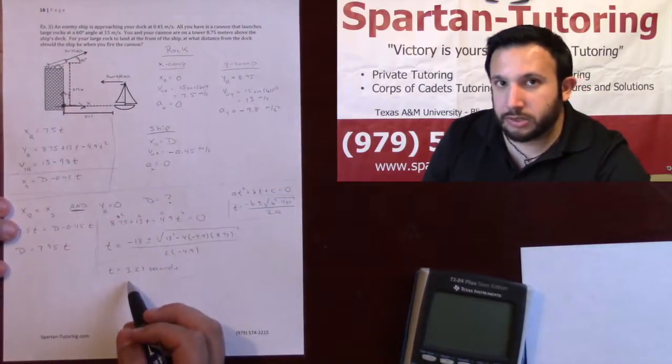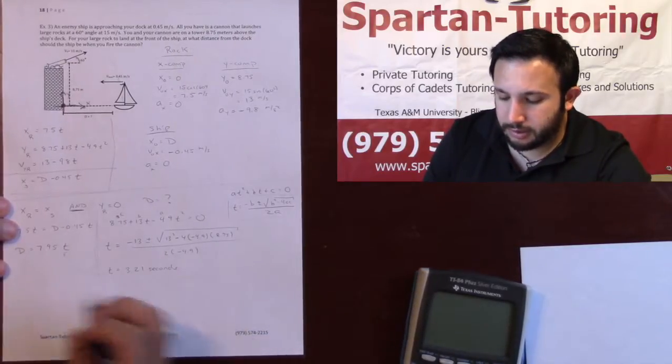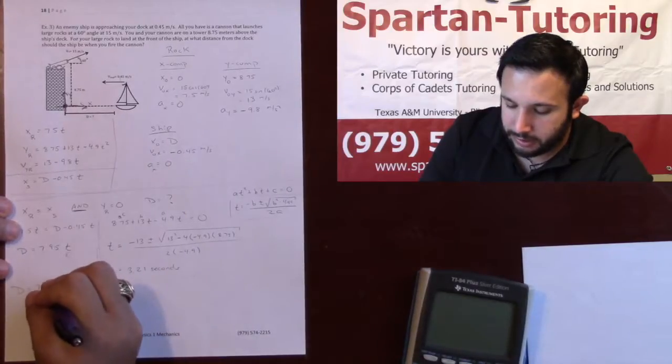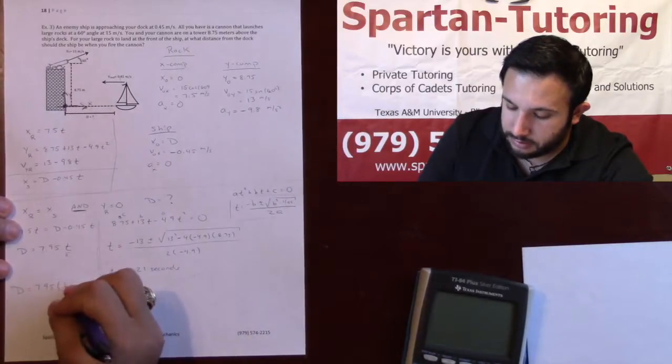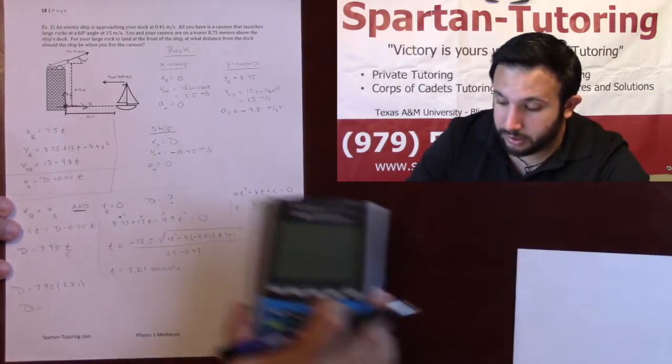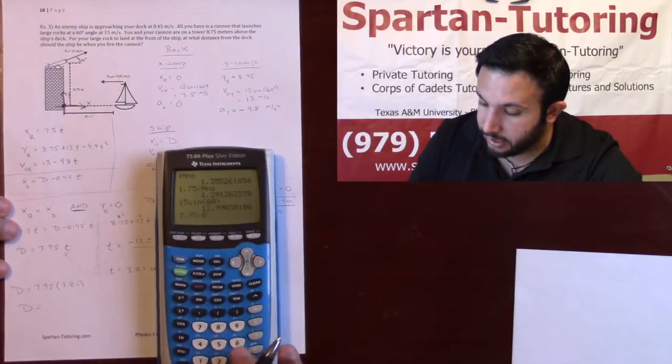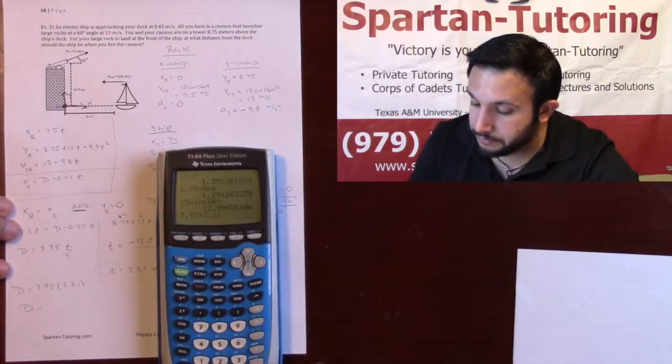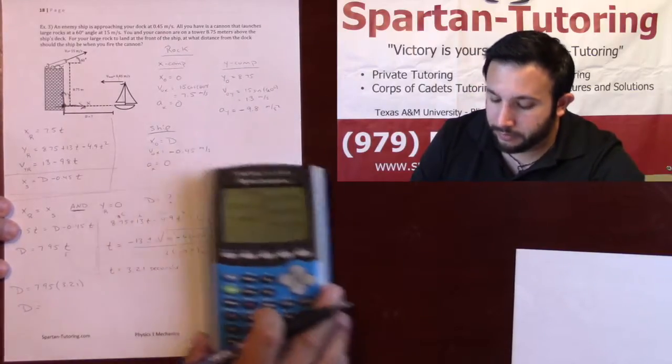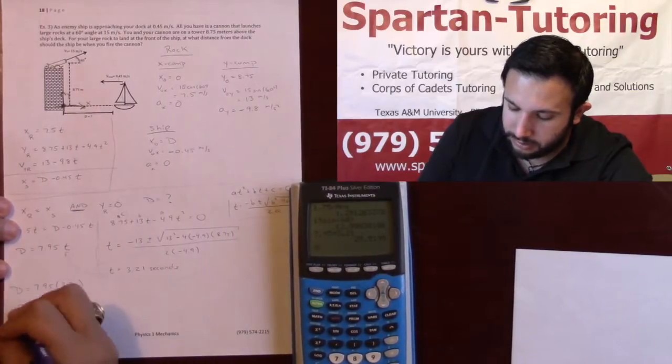Just plug that in there, and so that distance d will be 7.95 times 3.21. Let's actually plug that into the calculator, so we're going to have 7.95 times 3.21, and we'll call it 25.5 meters.